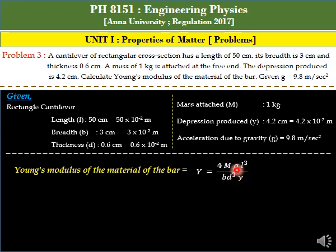Where M is the mass, g is the acceleration due to gravity, l is length of the cantilever, b is breadth of the cantilever, d is thickness of the cantilever, and y is the depression produced.